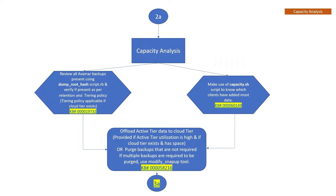For this Capacity Analysis step, we know the data is being managed by Avamar Backup Software because Data Domain doesn't have any intelligence of its own — it is just storing the data as managed by the backup software, in this case Avamar. We have some scripts available. The first script is called the Dump Root Hash Script, which you can run on Avamar to pull up information about all the backups present, along with their creation date, expiration date, logical size, and which tier they are residing on. The other script is called the Capacity.sh script, which can guide you to know which client has the highest rate of data change, to help with capacity management decisions.